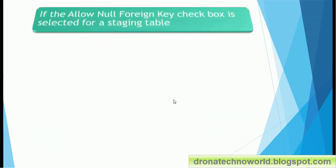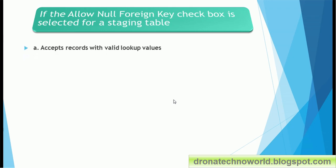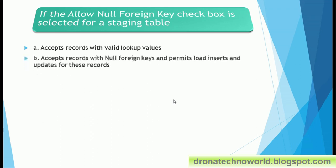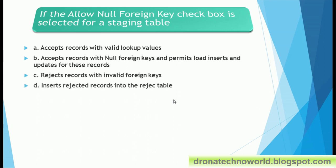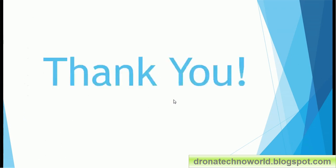Next question: if the 'Allow Null Foreign Key' checkbox is selected for a staging table — option A: it accepts records with valid lookup values; option B: it accepts records with null foreign keys and permits load inserts and updates for these records. The correct answer is all of the above — these are the questions for today's quiz.